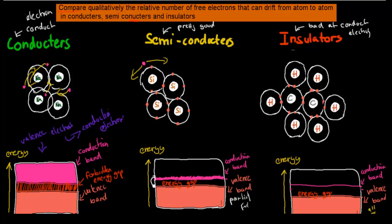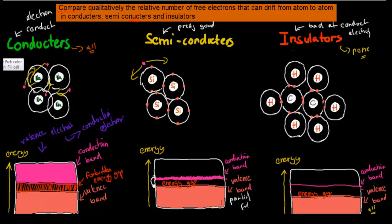For conductors, it's more or less all — generally all of the electrons can drift around because they're all conduction band electrons. For insulators, at room temperature it's usually none — basically all of them are stuck, can't move, and are bound to their actual atom. For semiconductors, we've got a few — a tiny number — that have managed to get enough energy to jump from the valence band into the conduction band, but most of them are still stuck.